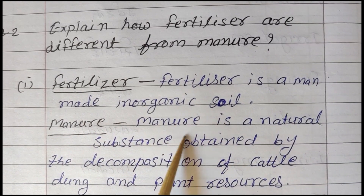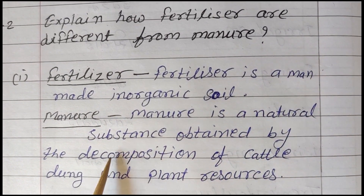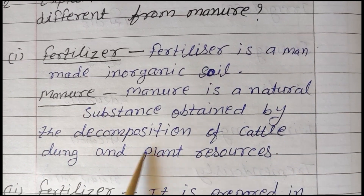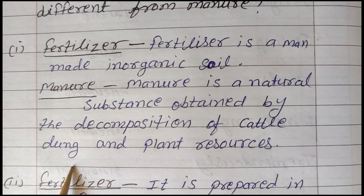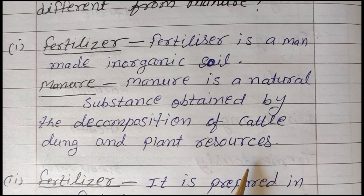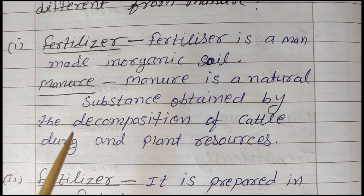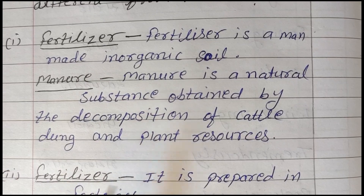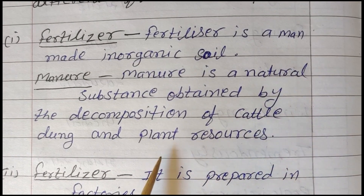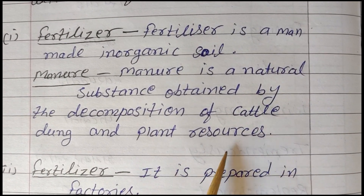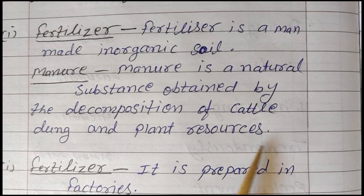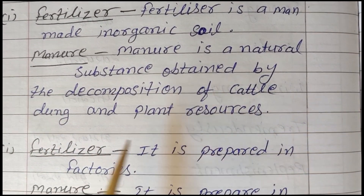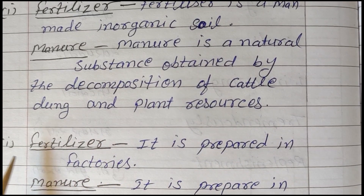Manure: Manure is a natural substance obtained by the decomposition of cattle dung and plant residue. (Khad ko prakritik padarth ke dwara prapt kiya ja sakta hai, jaise ki paudho ke sade hue avashesh aur pashon ke gobar ke decomposition se banaya jata hai.)